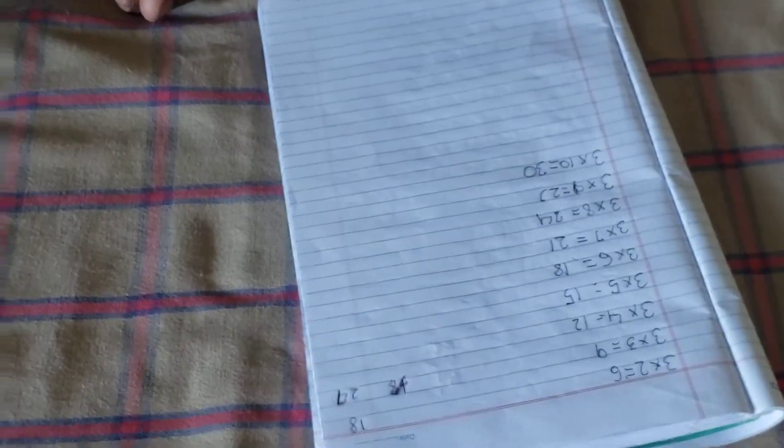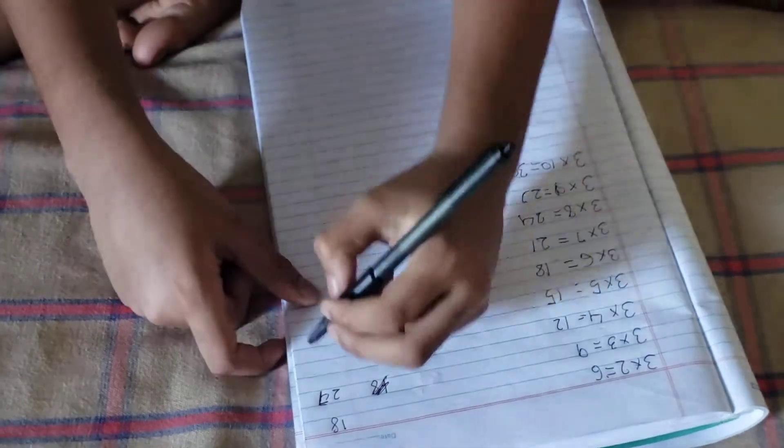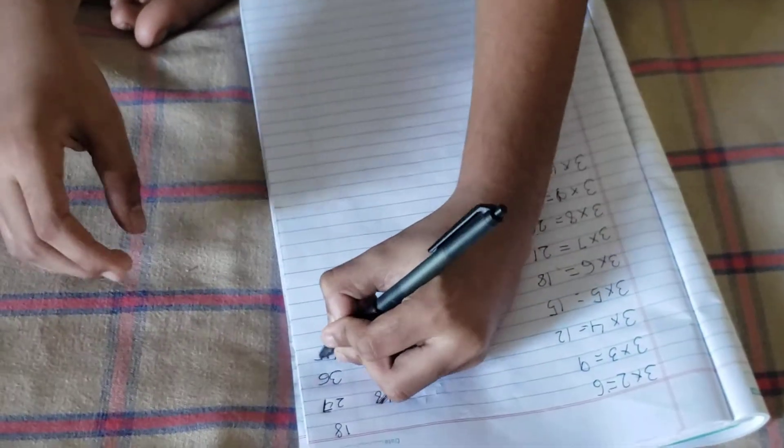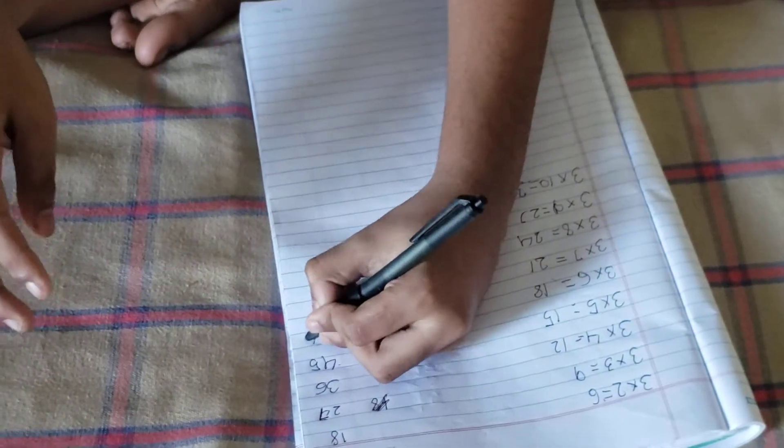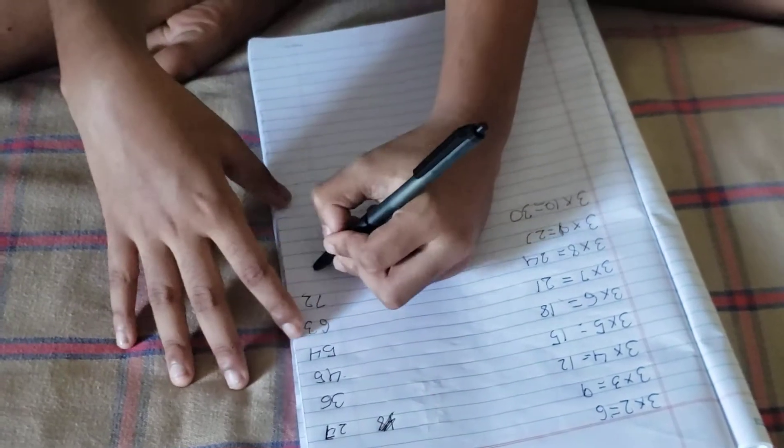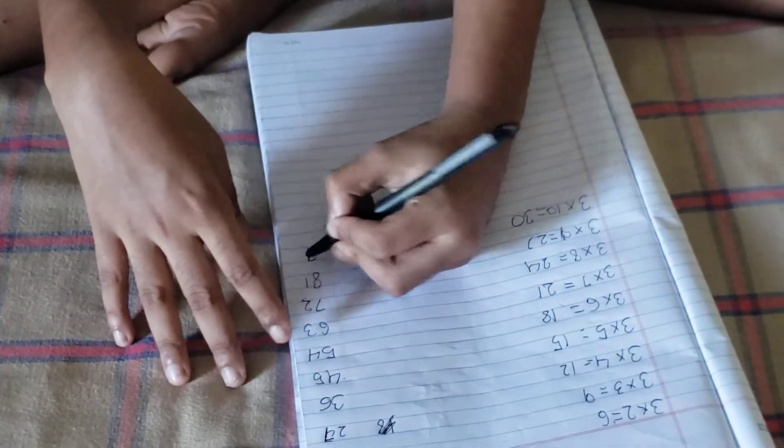I'm really confused with tables. 27. Next is 36. This is easy. 45, 54, 63, 72. And 81, 90.